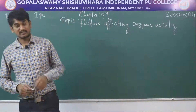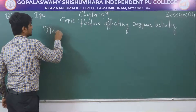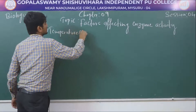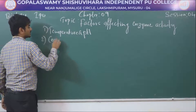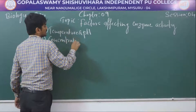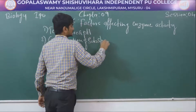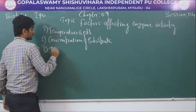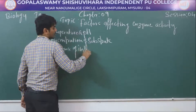So there are three factors. One is temperature and pH. The second one is concentration of substrate. The third one is presence of inhibitor.